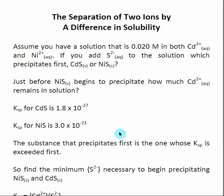Previously we've seen how to get an ion from an insoluble salt to precipitate out by adding a certain concentration of the counter ion. Now we're going to take that up a step and actually separate two different ions from the same solution by utilizing a difference in their solubility. We're working with a solution containing Cd²⁺ and Ni²⁺, and S²⁻ will form the insoluble salts cadmium sulfide with Cd²⁺ and nickel sulfide with Ni²⁺, which we'll use to separate them as precipitates.